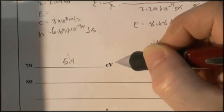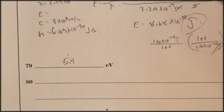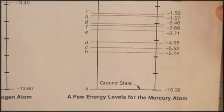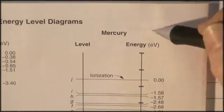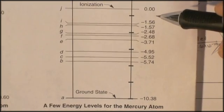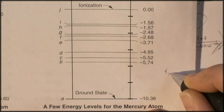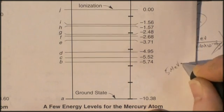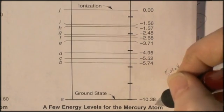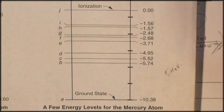I've got 5.4 EVs. So here's what's happening. You've got this chart here. It has the energy levels for mercury. And these are different energy levels. And we've got 5.4 EVs of energy. So if we added 5.4 to 10.38, what state would that leave us at?